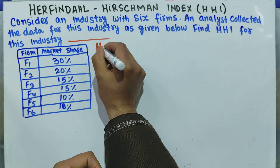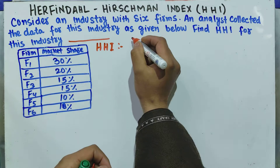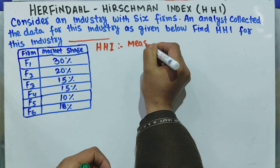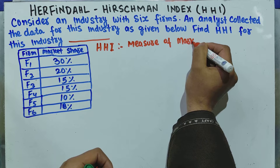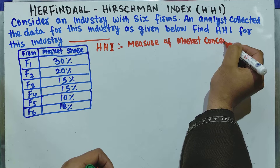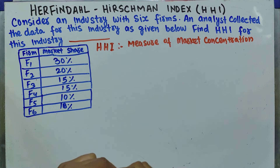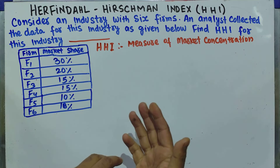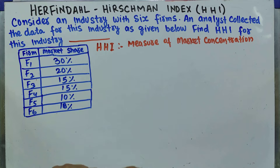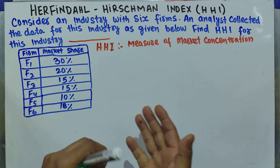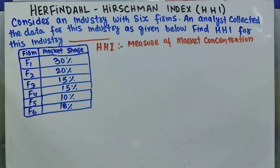The Herfindahl-Hirschman Index is a measure of market concentration. By market concentration, we mean it measures the extent of domination of market share by one or more firms — how much a particular firm or number of firms dominate the market. That is called market concentration.